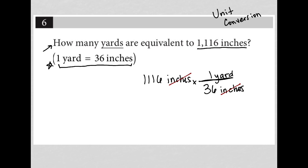Now that you've accomplished that, you can go straight to your calculator and do the math, which would just be 1,116 divided by 36, which equals 31. Of course, the unit here is yards because that's the only unit we have left that has not canceled.